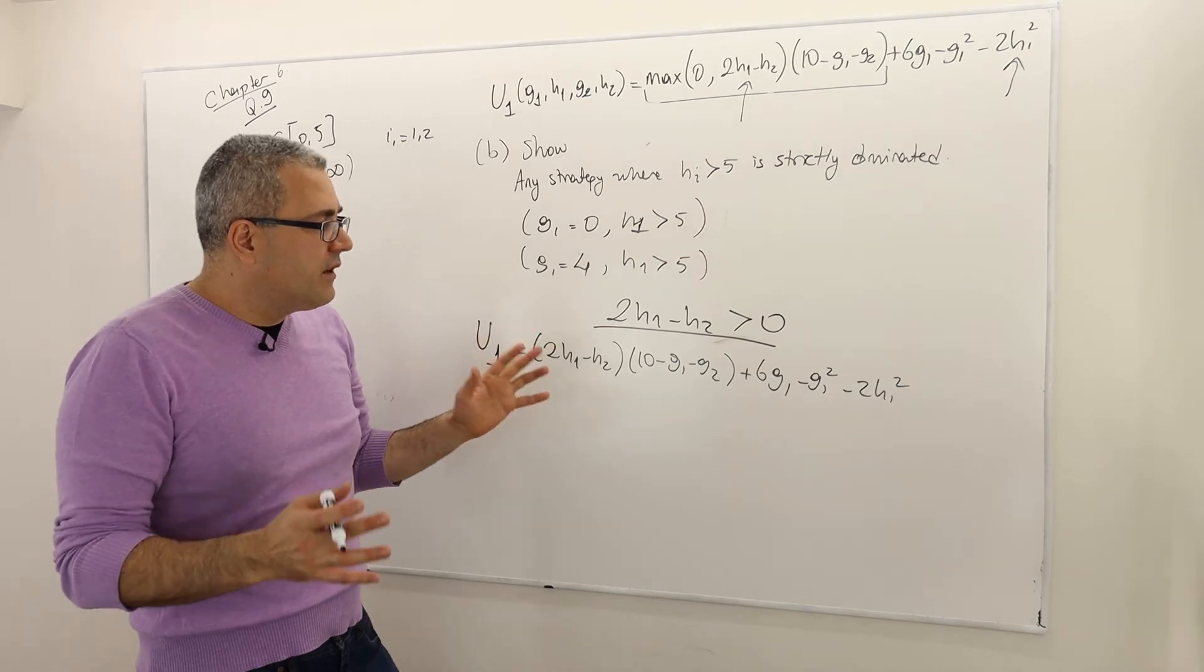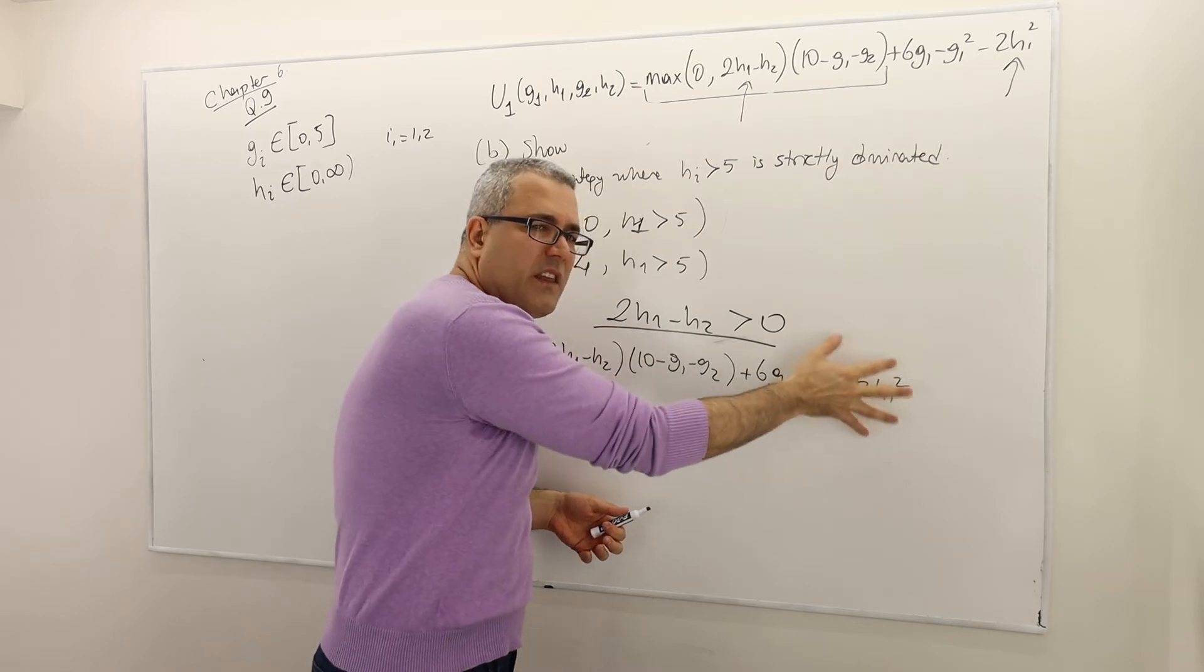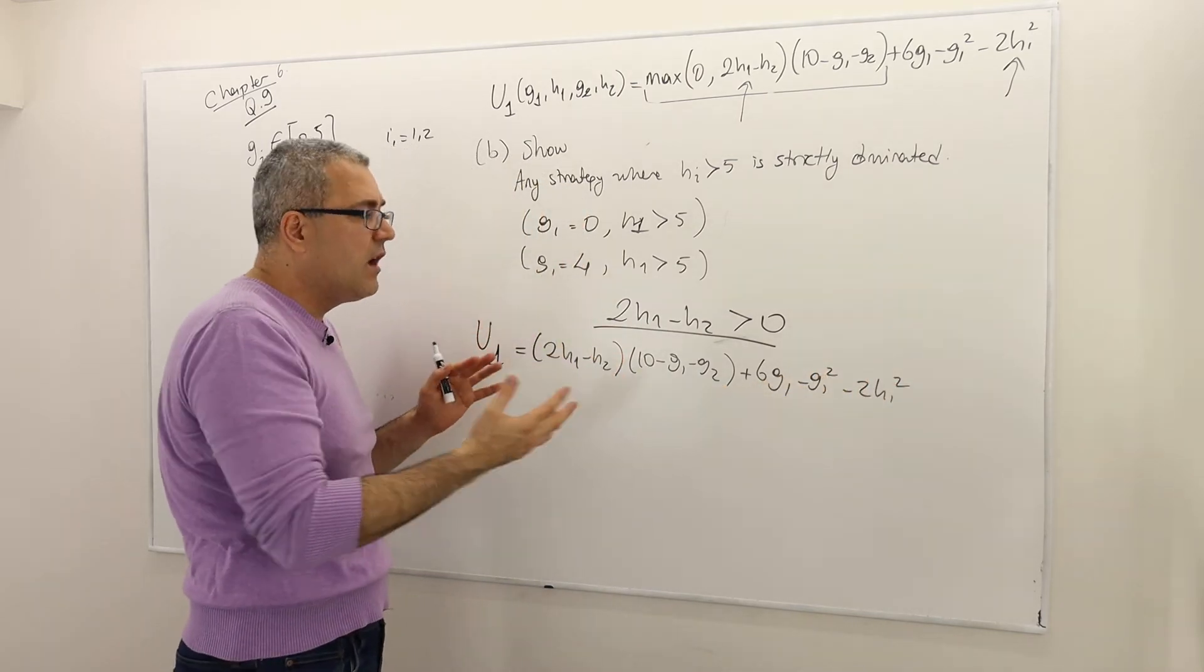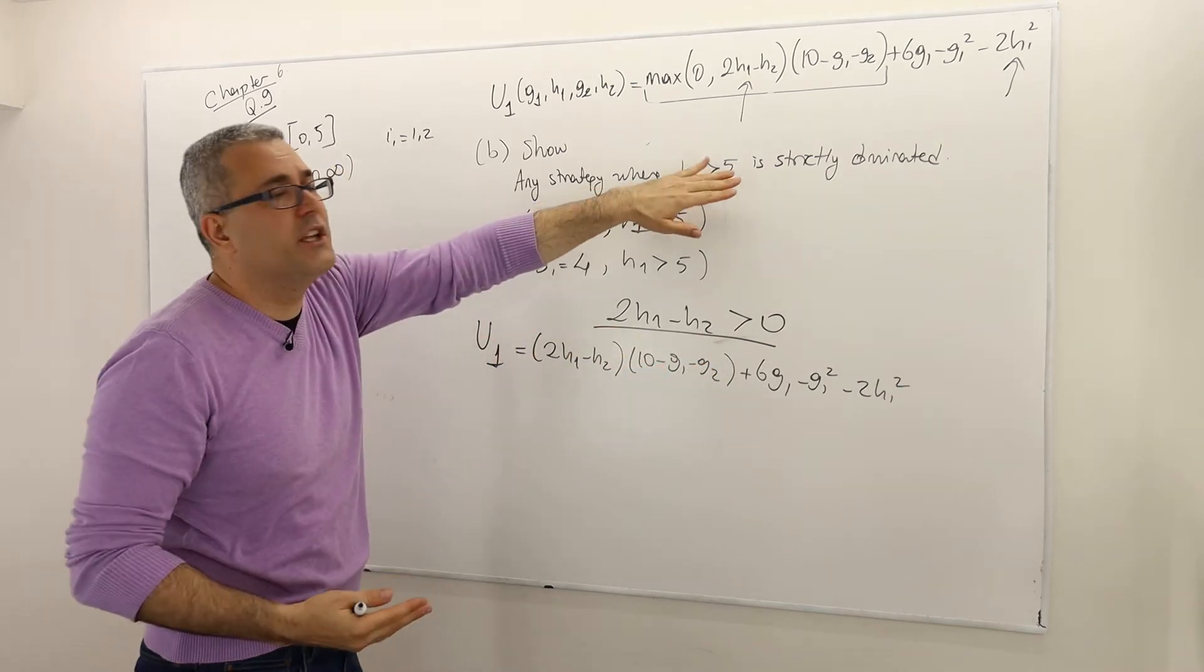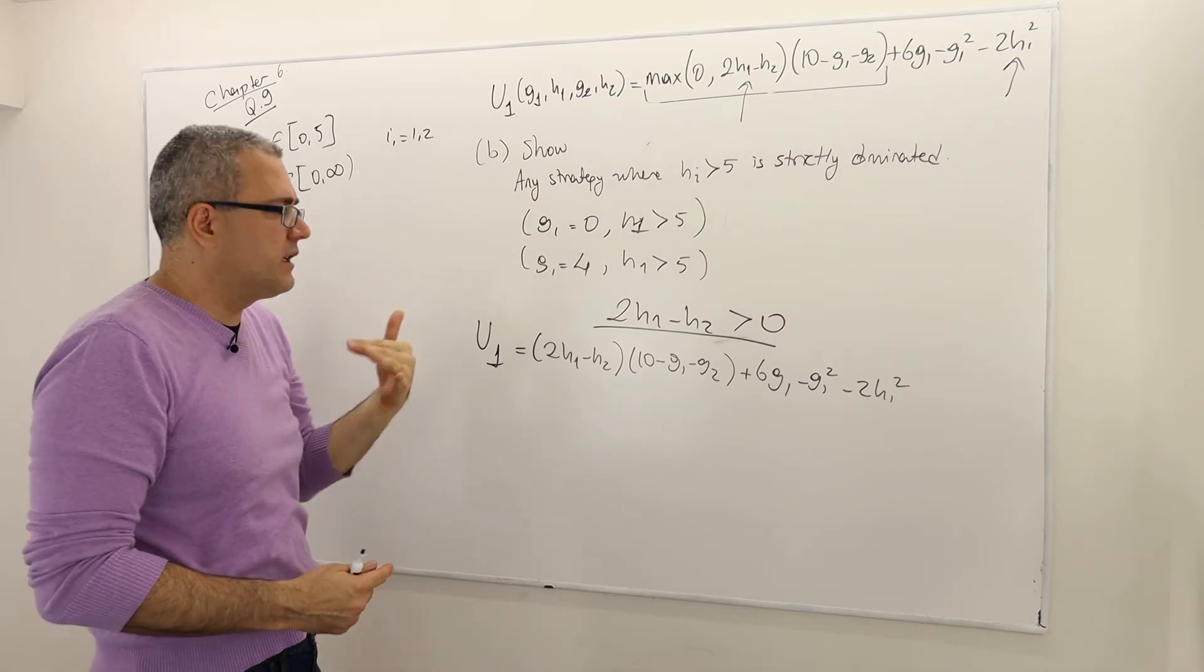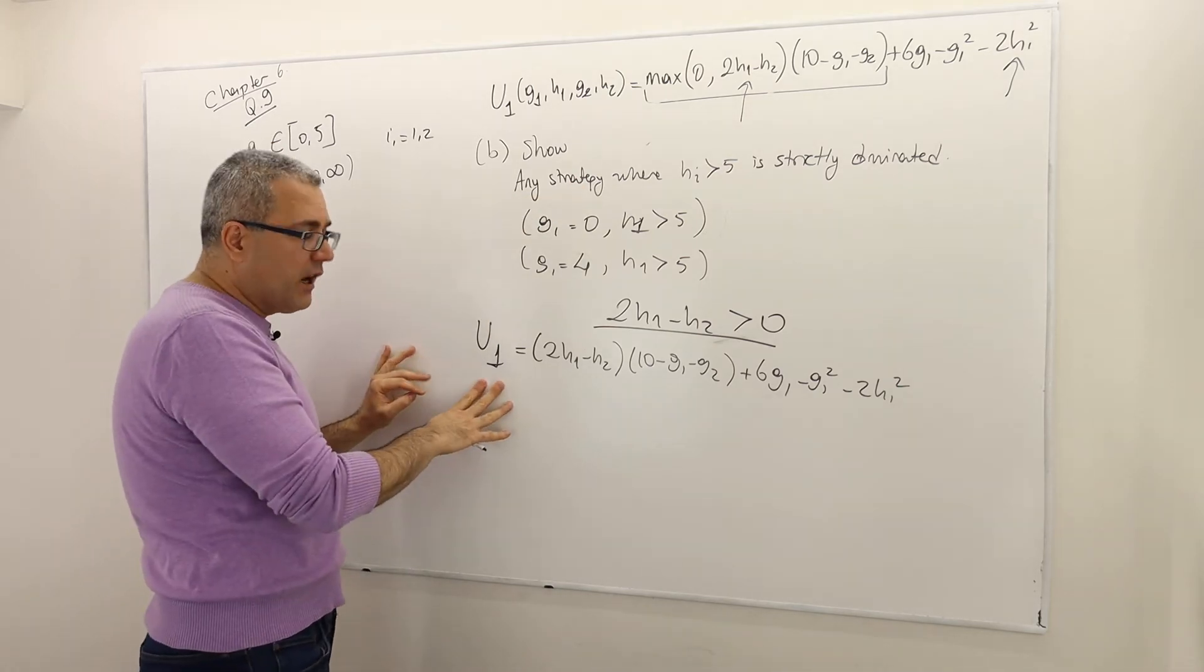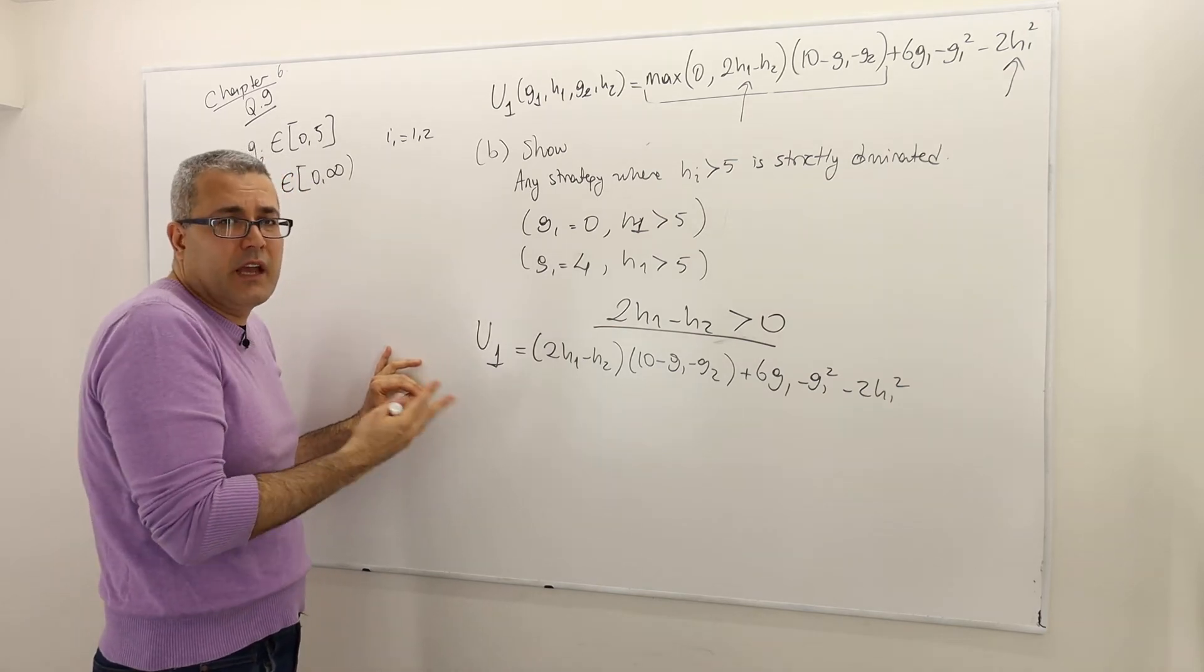So that means, you know, as H1 is higher and higher, probably this minus thing is going to reduce the payoff rather than increasing it. But once again, it doesn't say, I mean, the first look doesn't say anything about H1 greater than being 5 or less than 5.